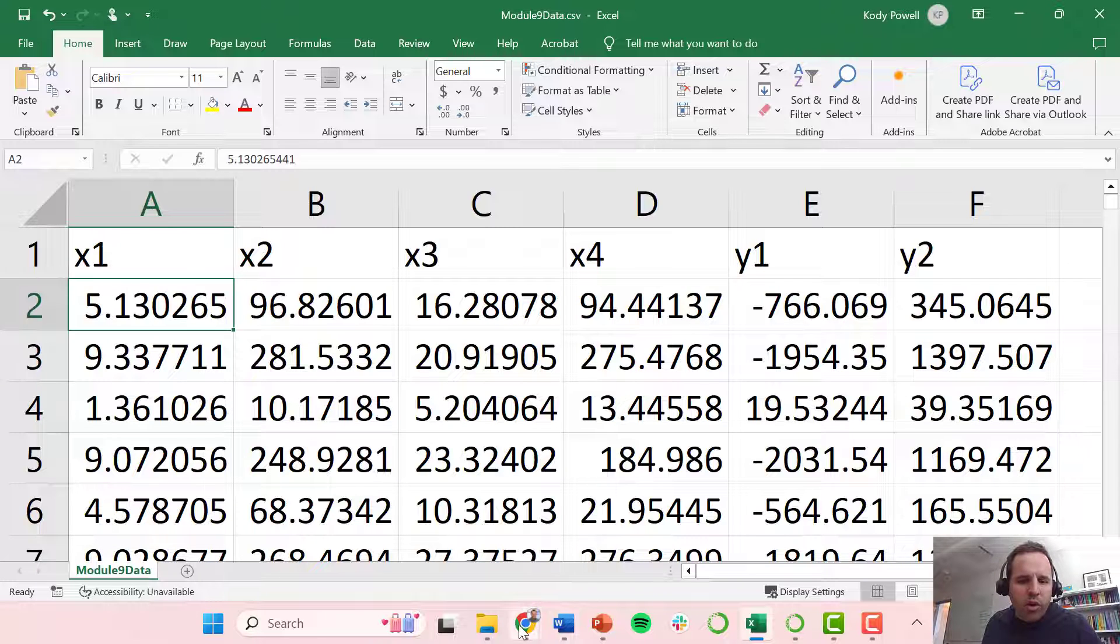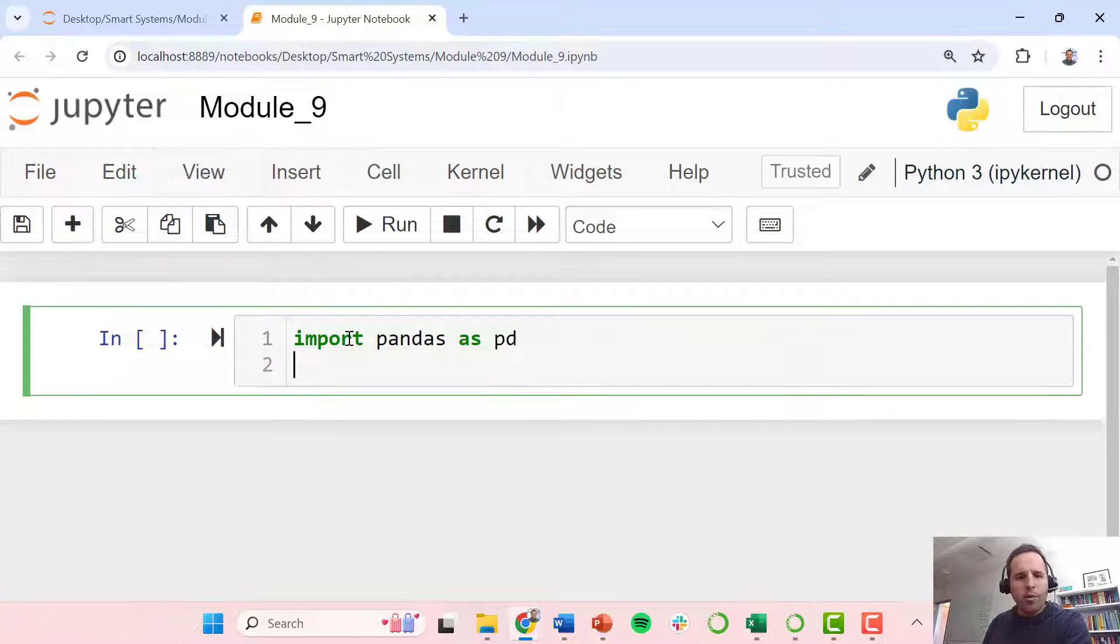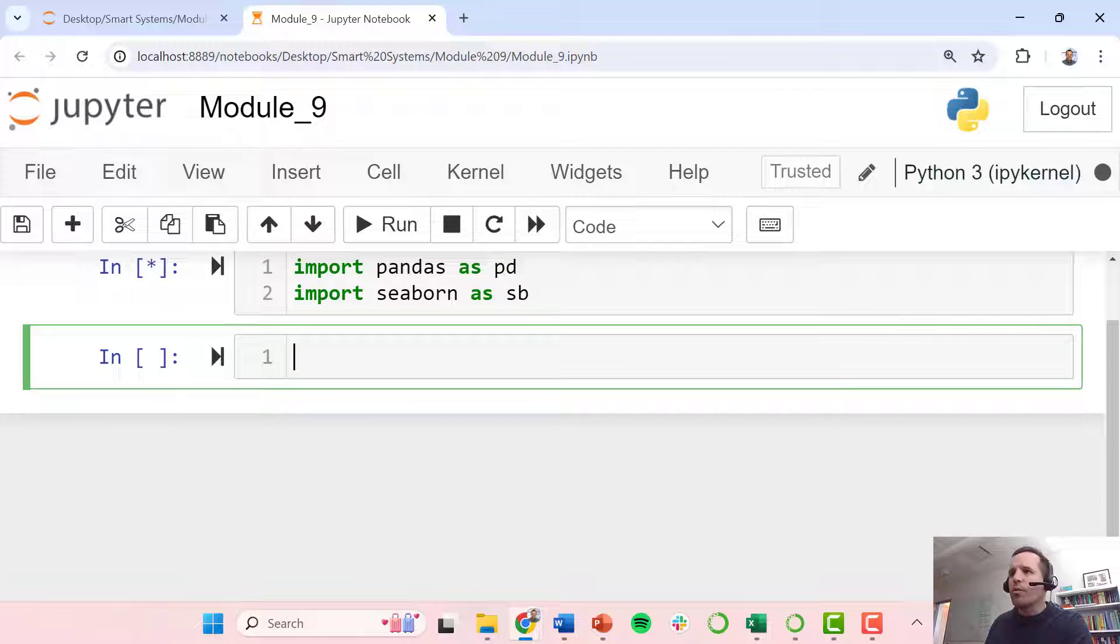So we're just going to go very quickly and introduce this concept of a pair plot and show you how to use this tool. The toolboxes we will need in Python are pandas, so we're going to import pandas as PD, and then we're going to import this tool Seaborn as SB. We're going to go ahead and run this.